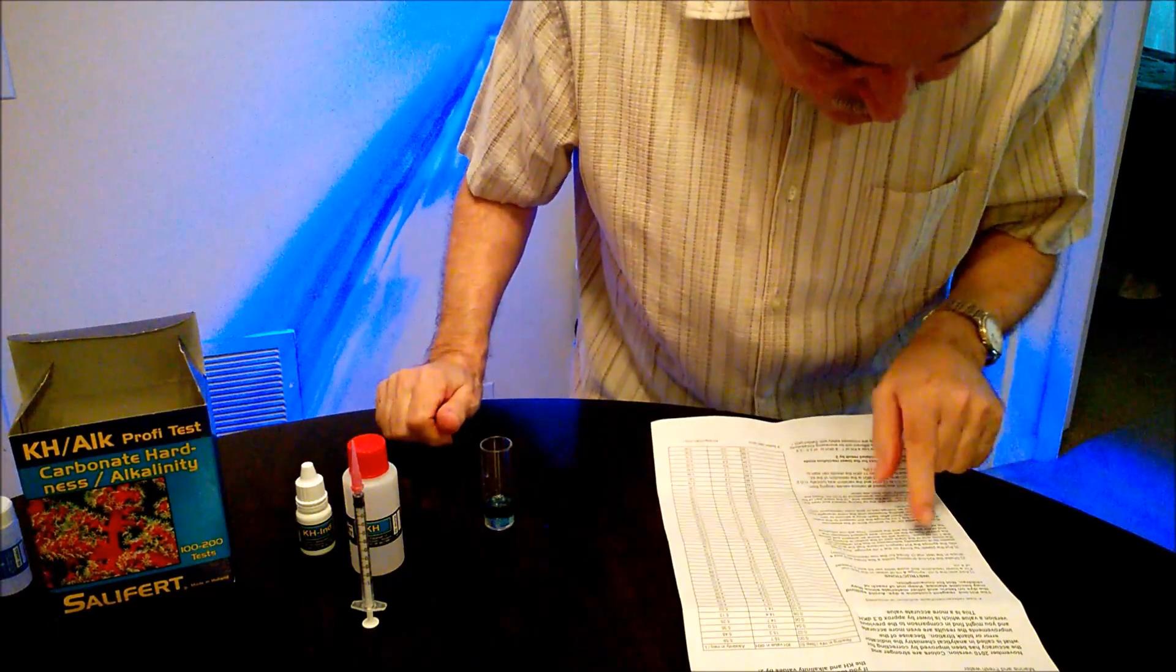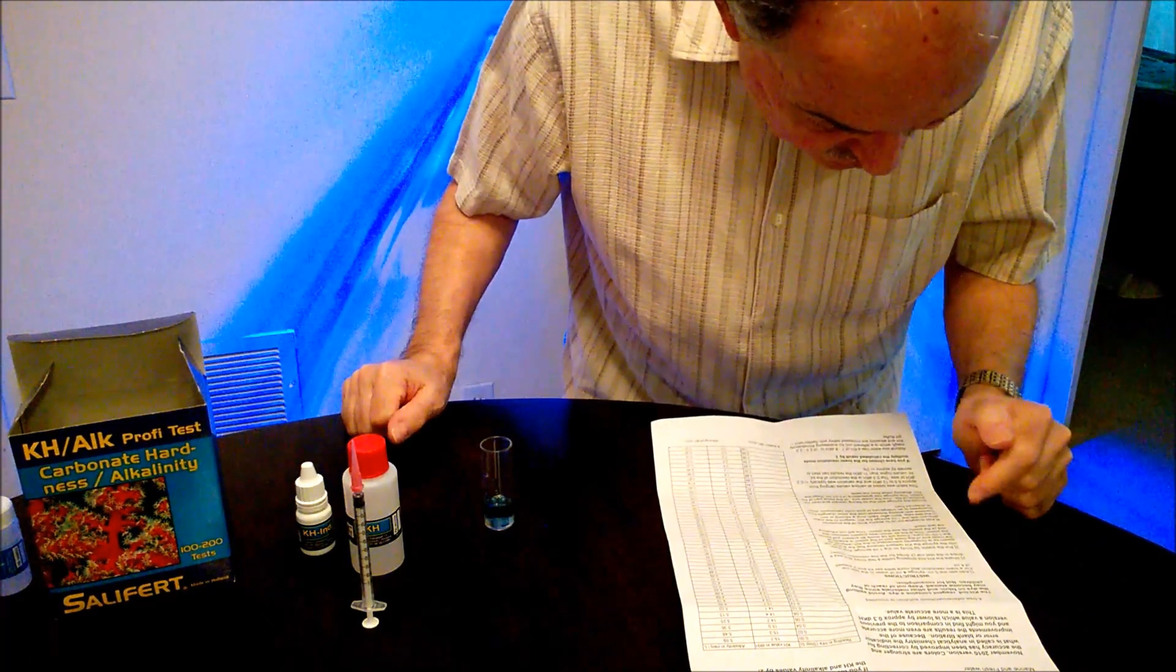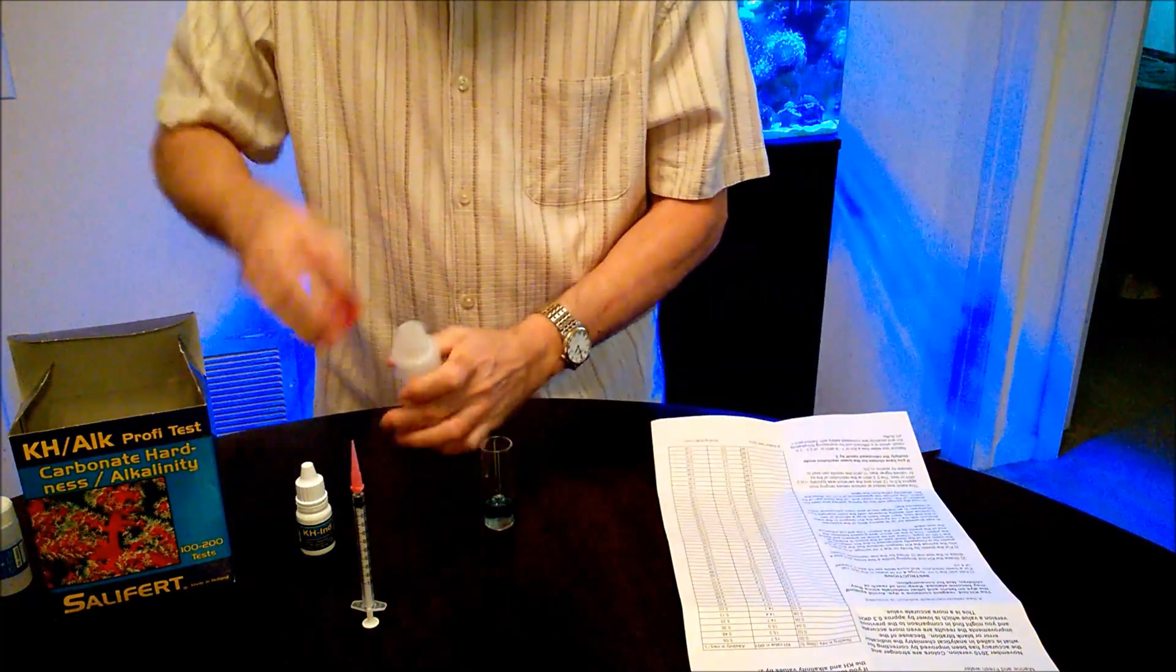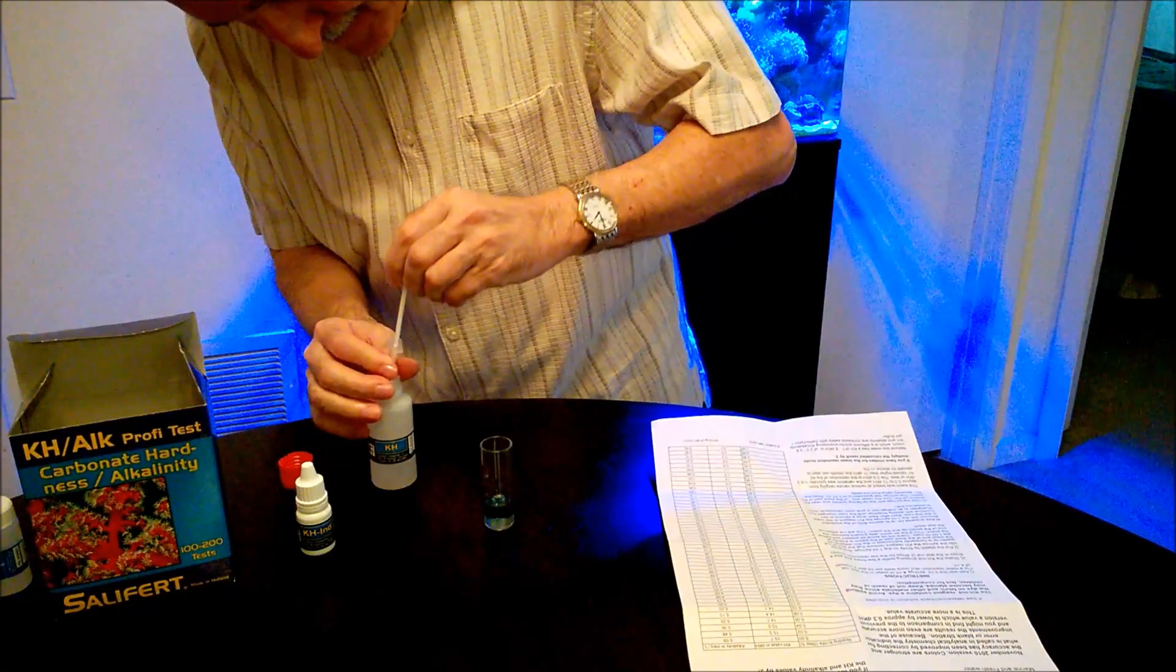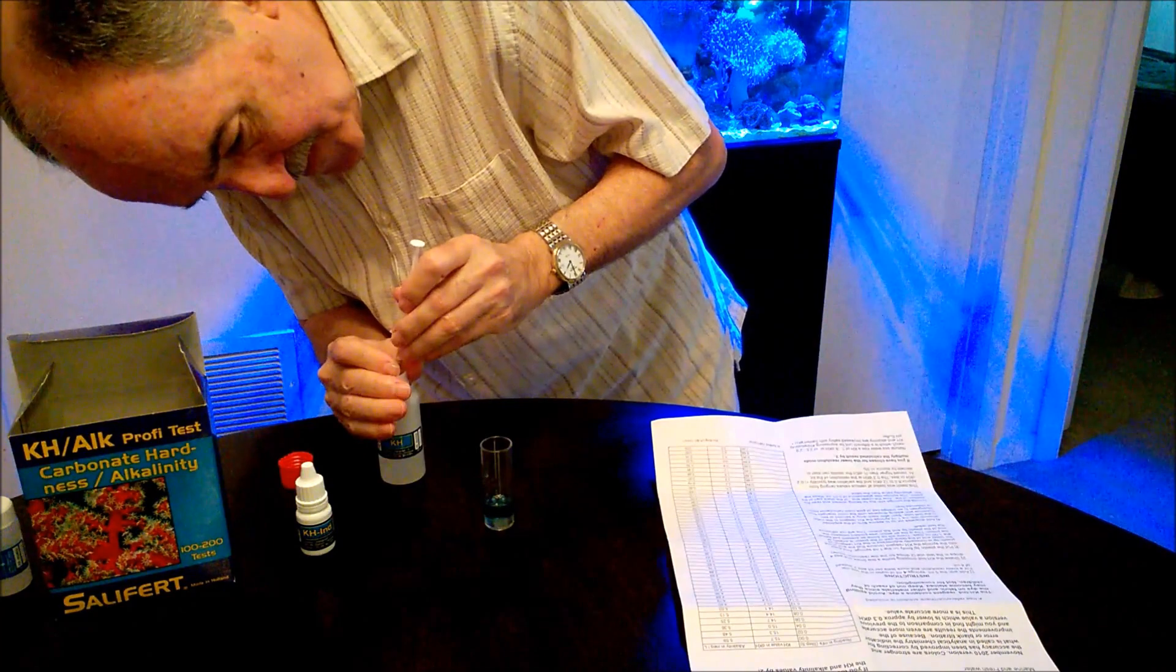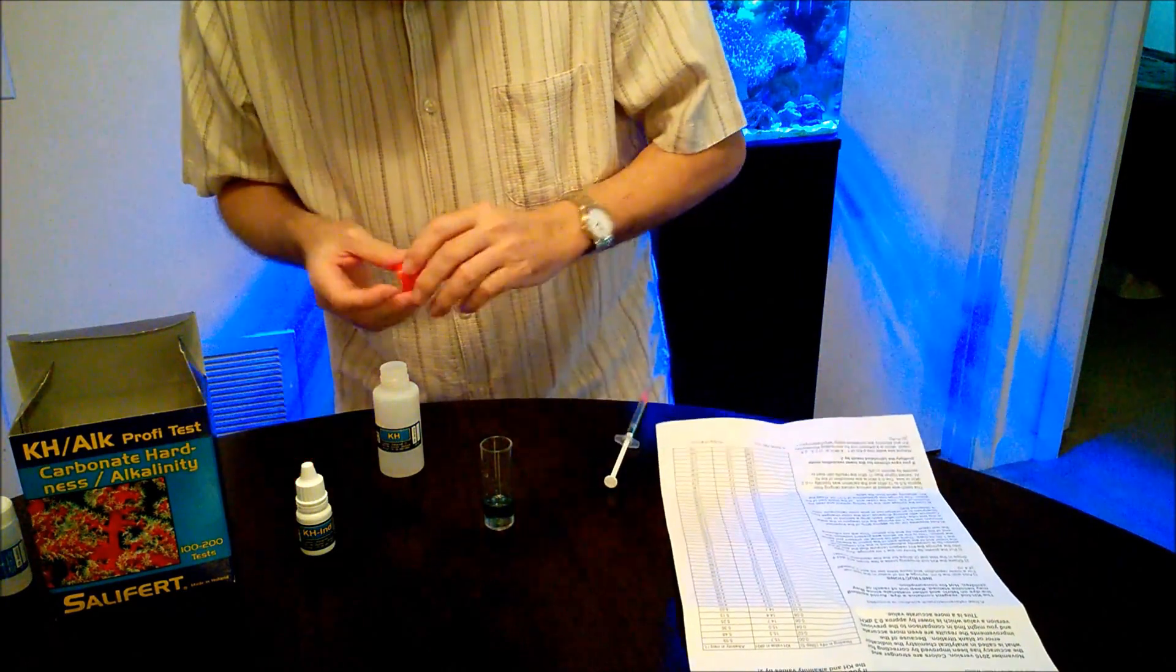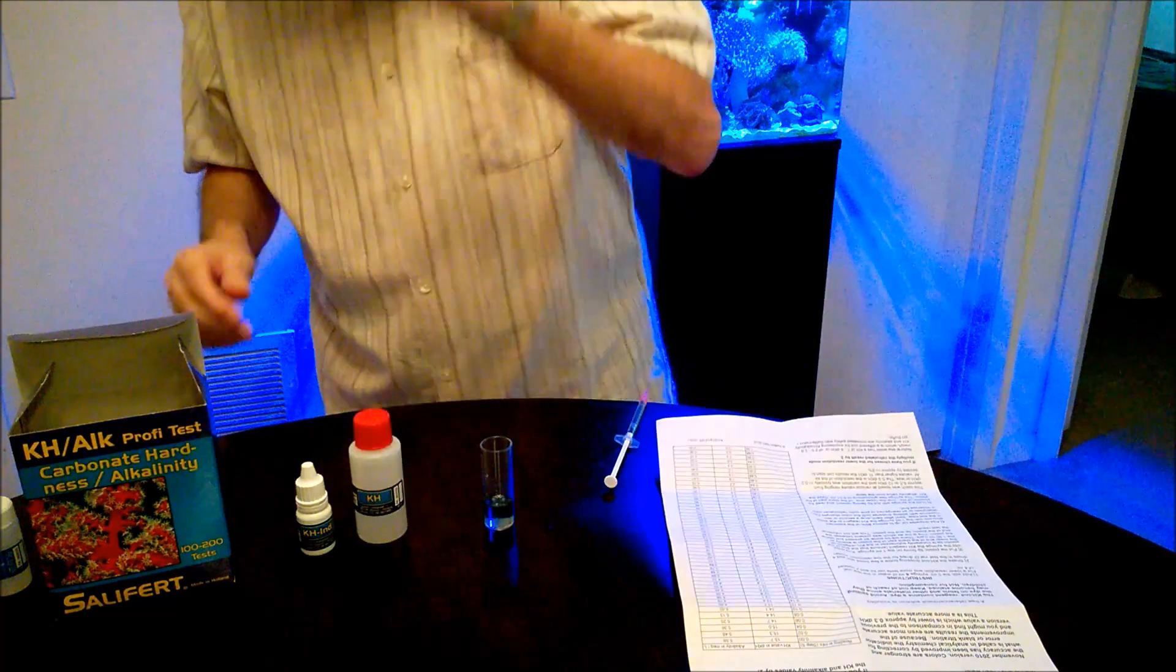Then number three, it says put the plastic tip on the 1ml syringe, and you're going to extract 1ml of the KH solution. So let's go ahead and do that. There we are.